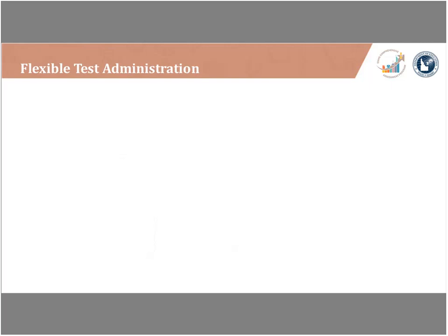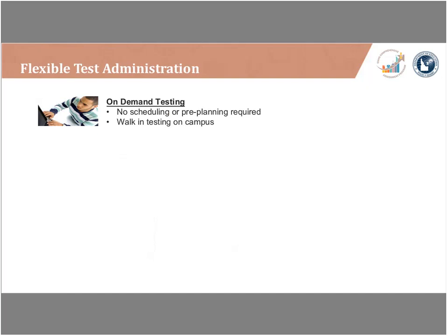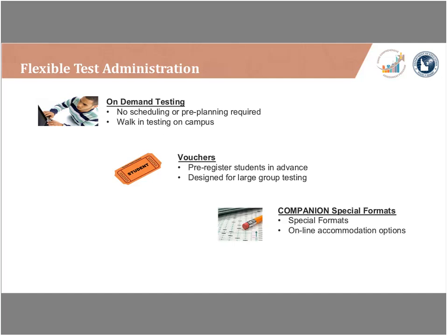There are three different ways to administer Accuplacer. First is on-demand: for one, two, or three students with no scheduling required — walk-in testing. You sit the student at the computer, log in, choose the test, and the student begins. Second is the pre-registration or voucher system, recommended for groups of more than 15 to 20 students. It requires some front-end work but makes test day run much smoother and gets students onto the test faster. Third is the companion special format, or paper-pencil version.